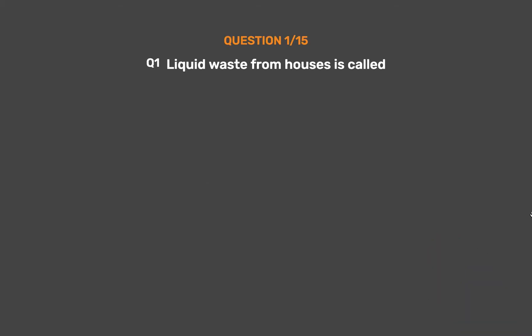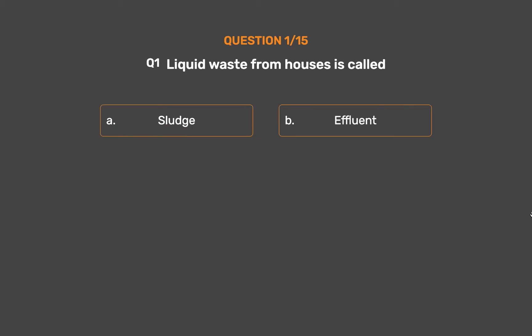Question Number 1. Liquid waste from houses is called. Option A: Sludge. Option B: Effluent. Option C: Smog. Option D: Sewage.